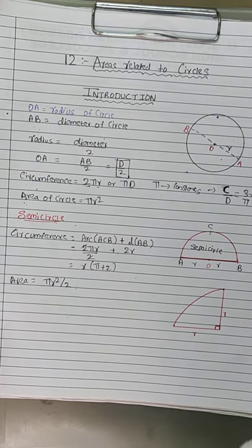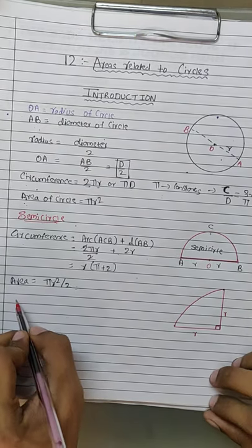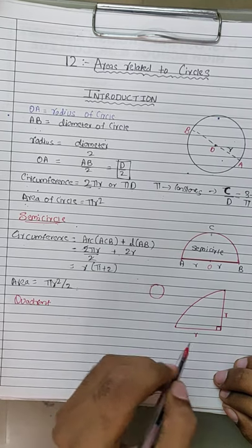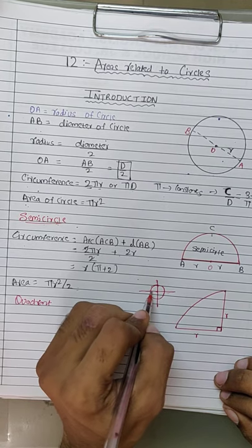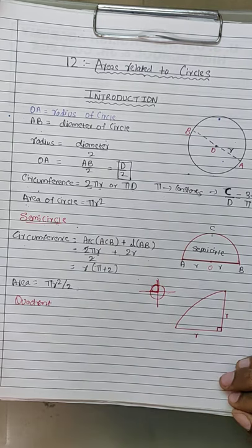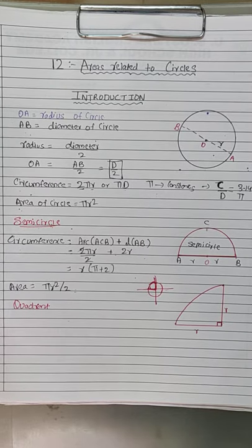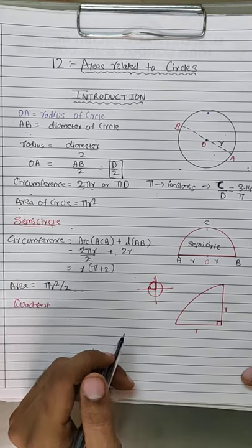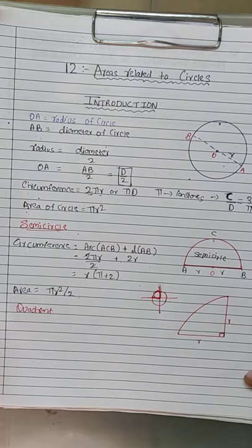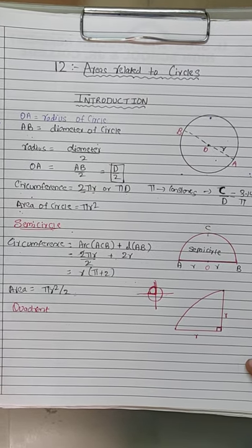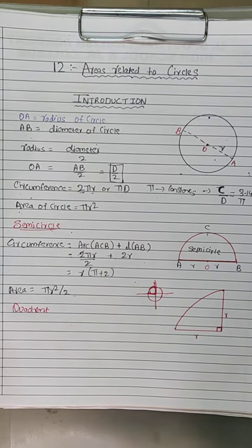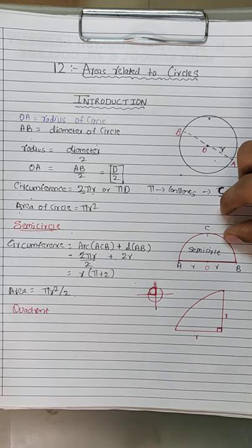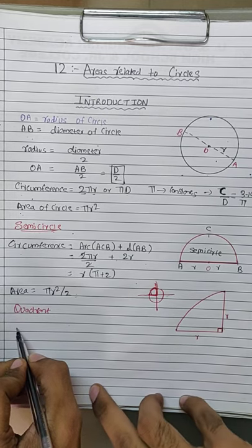The next concept we are going to see is the quadrant. A quadrant is when a circle is divided into 4 equal parts — one such part is called a quadrant. Now if I need to find the circumference or perimeter of this quadrant — let's say the points are A, O, and B — I need the arc AB plus both radii OA and OB.